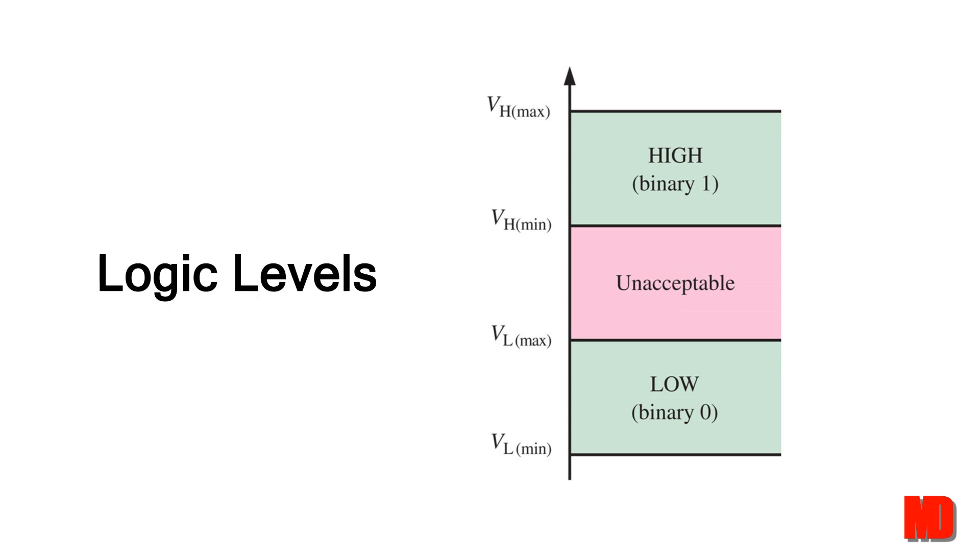As a reminder, a 1 is the on or high state, and 0 is the off or low state.